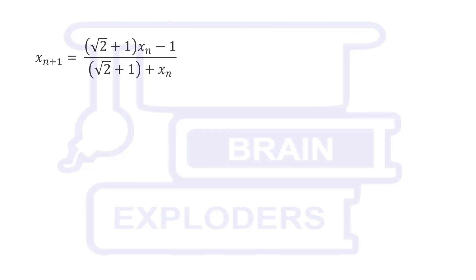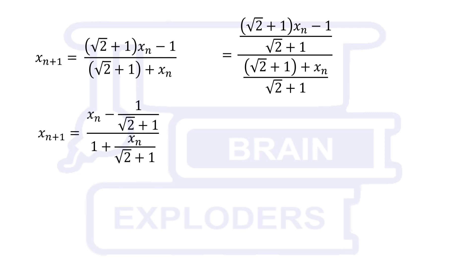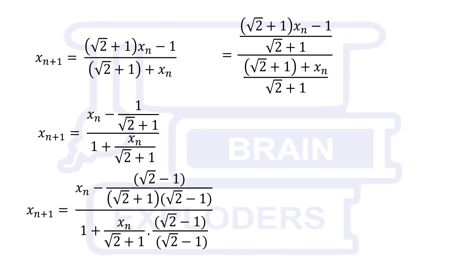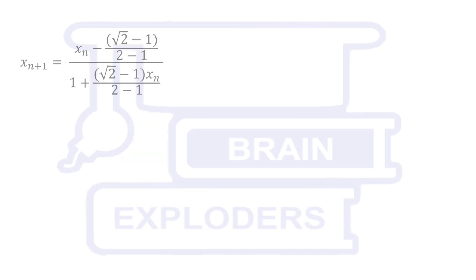Start with a simple variation in iterative formula. Divide numerator and denominator by root 2 plus 1. Multiply root 2 minus 1 in numerator and denominator of 1 over root 2 plus 1. Here we have the form a plus b times a minus b. So, root 2 plus 1 times root 2 minus 1 is equal to 1.